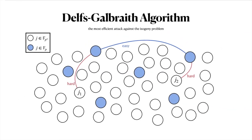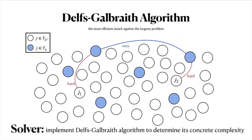In Solver, we implement an optimized Delfs-Galbraith algorithm and determine its concrete complexity. This is really important for determining concrete parameters for schemes whose best attack is the Delfs-Galbraith algorithm, such as the soundness of a recent isogeny-based signature scheme, SQISign.